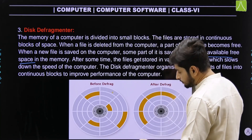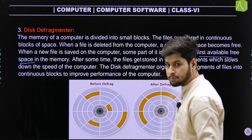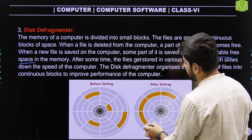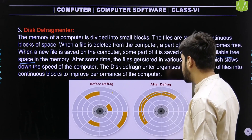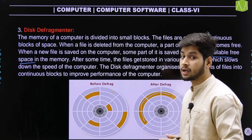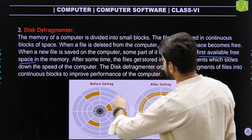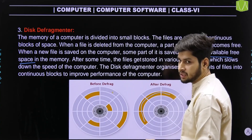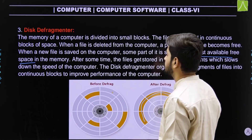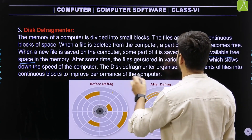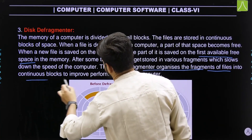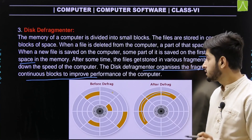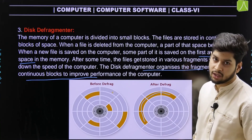This image shows that files are not arranged in order. When you perform defragging as a utility software on the computer system, it will rearrange your files into continuous blocks, improving computer memory performance and making it faster. After some time, files get stored in various fragments which slows down the speed. Disk defragmenter organizes the fragments of files into continuous blocks to improve the performance of the computer, making it faster.